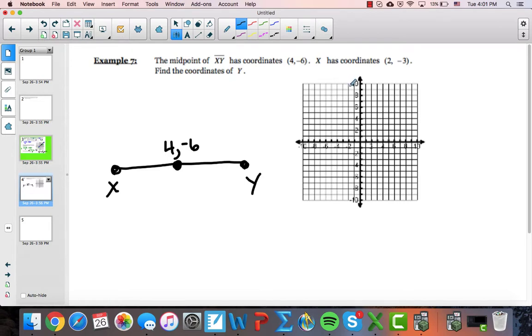And I know that the midpoint of this segment is the coordinate point (4, -6). And one of the endpoints is (2, -3). Now, I'm going to put it over here because the 2 is smaller than the 4, and I'm going to call that other point (x, y).